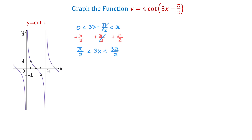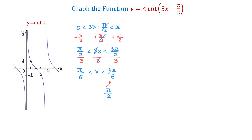Now, to get x alone, we need to divide all three parts by 3. To the left, pi over 2 divided by 3 is pi over 6. In the middle, 3 and 3 will cancel and we will get x. To the right, 3 pi over 2 divided by 3 makes 3 pi over 6, which will become pi over 2. So once we get x alone, we can say that at these points we will have two consecutive asymptotes for our cotangent function.